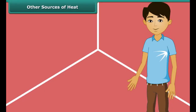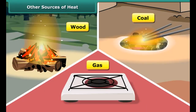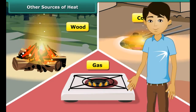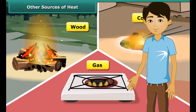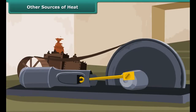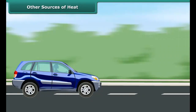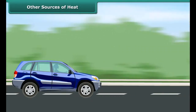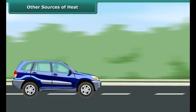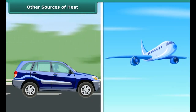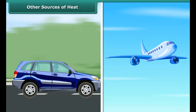Man can generate heat by burning wood, coal and gas. Wood, coal and gas are called fuels. Fuels burn in machines to make them work. A motor car runs by burning fuel; an aeroplane flies by burning fuel.